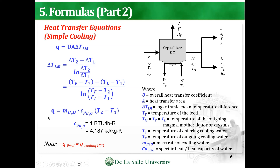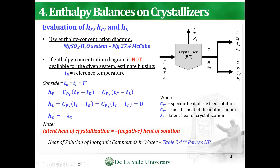And then to solve for the heat, it's MCP·ΔT. The CP for water is 4.187 kilojoules per kilogram Kelvin, or 1 BTU per pound Rankine. Taking note of this, the negative Q of the feed equals the Q of the cooling water.